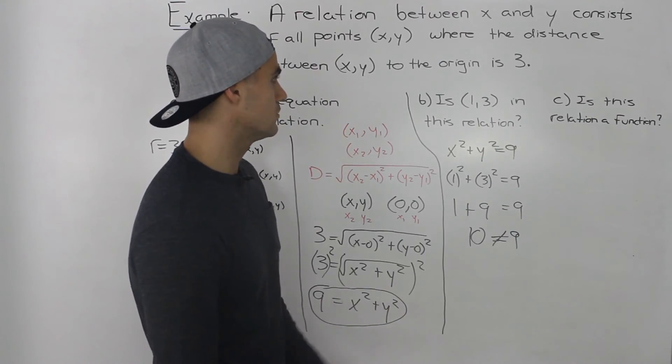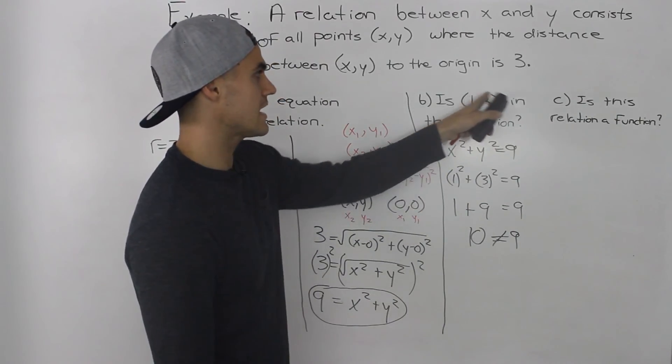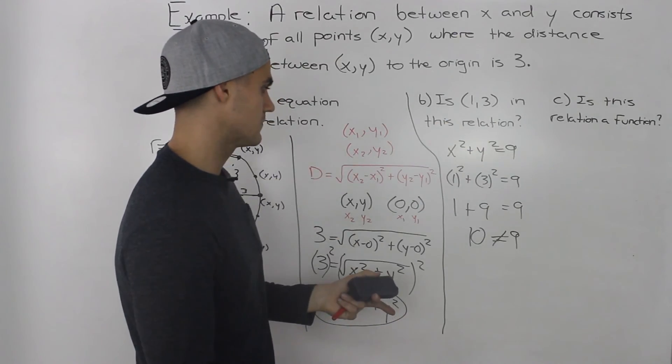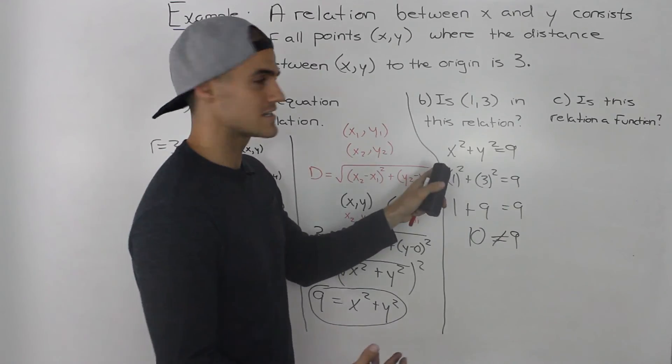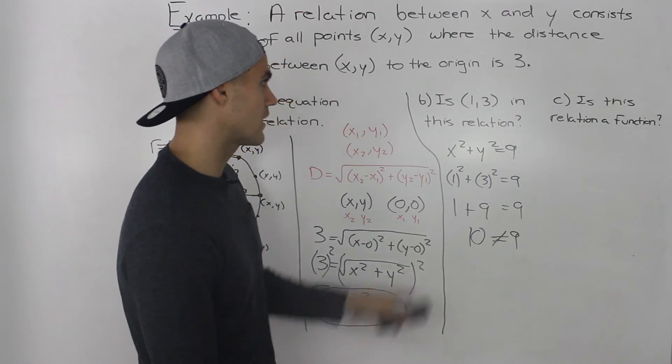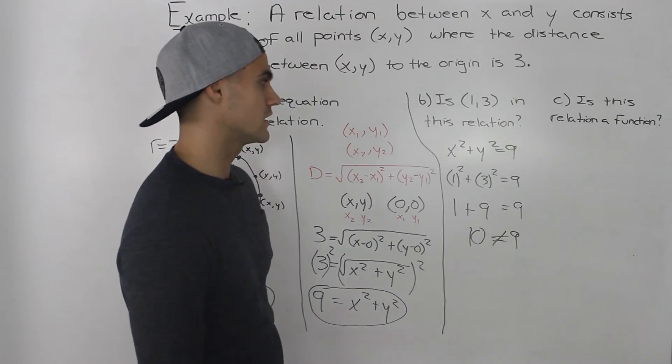Another thing you can do is take this point and find the distance between this point and the origin. You would get √10 as the distance, but the distance has to be 3. So that's another way that you can tell that it won't be in this relation.